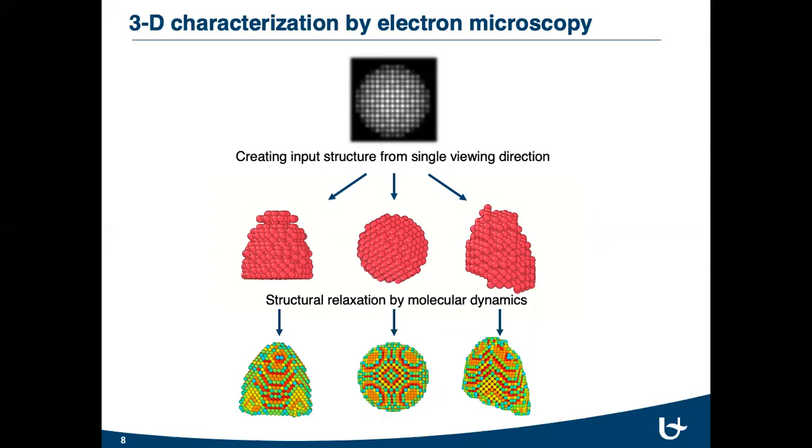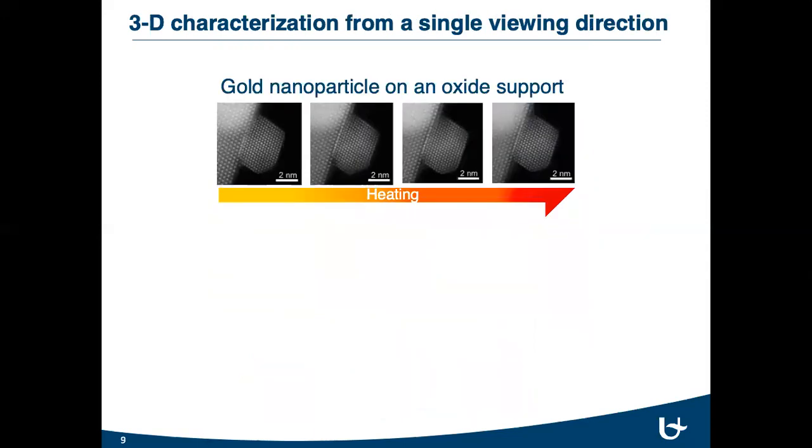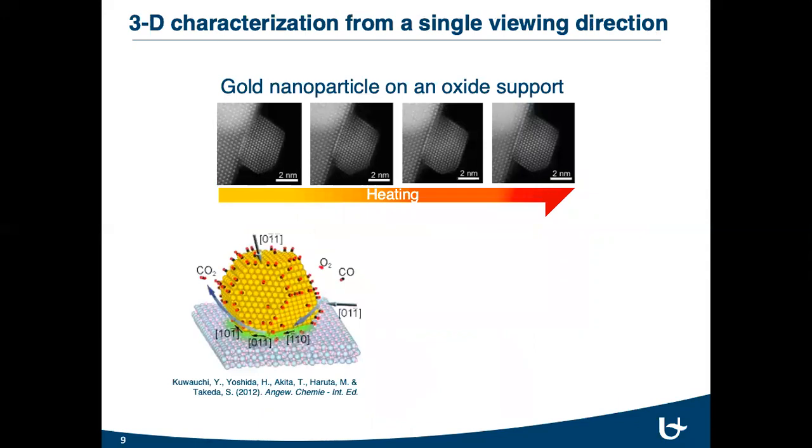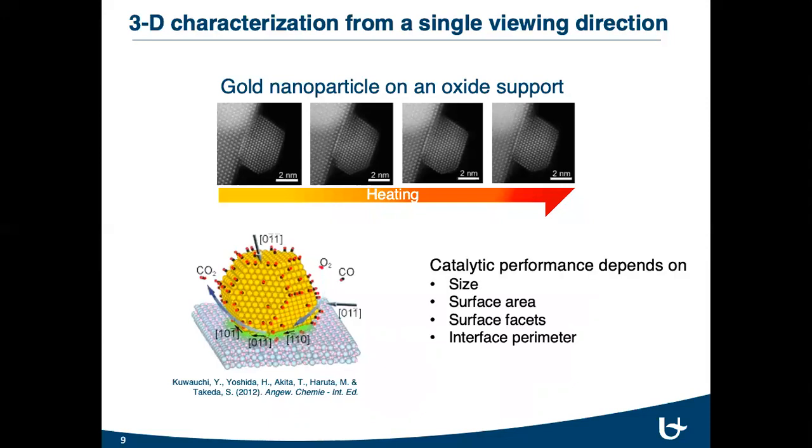So, to overcome these limitations, we focused on the optimization of the molecular dynamics initialization step. And we applied this method to gold nanoparticle on an oxide support during in-situ heating. It's known that supported gold nanoparticles are extensively used as a catalyst, and their catalytic performance directly depends on their size, surface area, surface facets, and interface parameter. This means that their catalytic performance directly depends on their three-dimensional structures at elevated temperatures.